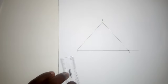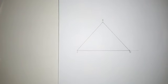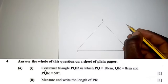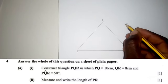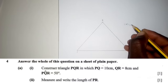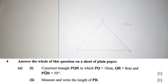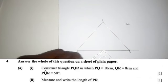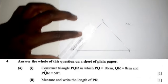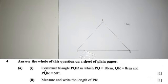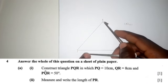We're done with our triangle. Now go to question A2 — they want us to measure the distance PR. You can use the ruler directly, or use your compass to measure.